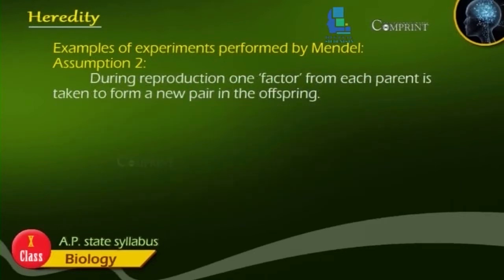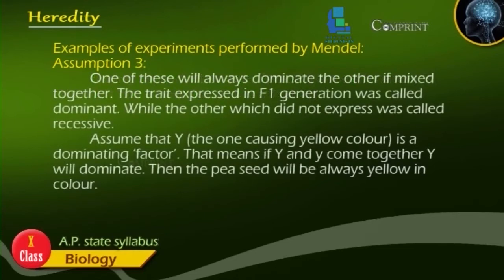Assumption 2: During reproduction, one factor from each parent is taken to form a new pair in the offspring. Assumption 3: One of these will always dominate the other if mixed together. The trait expressed in the F1 generation was called dominant, while the other which did not express was called recessive. Assume that Y is a dominating factor — that means if Y and small y come together, capital Y will dominate, and the pea seed will always be yellow in color.